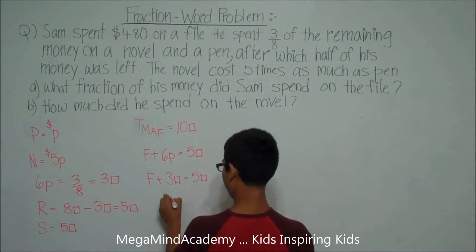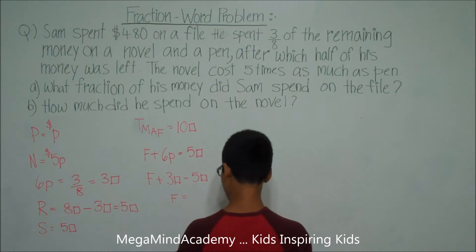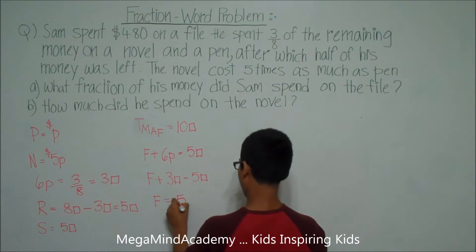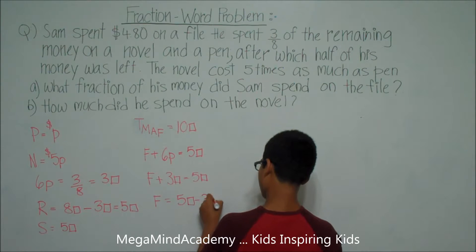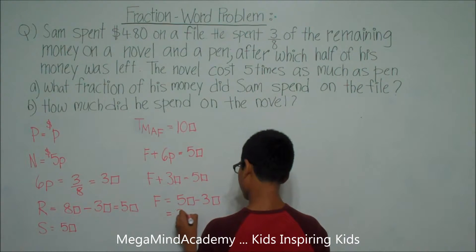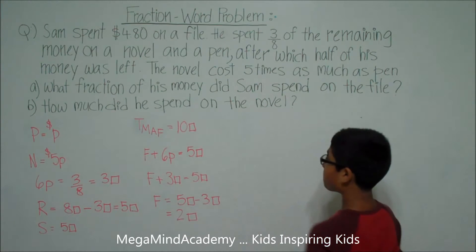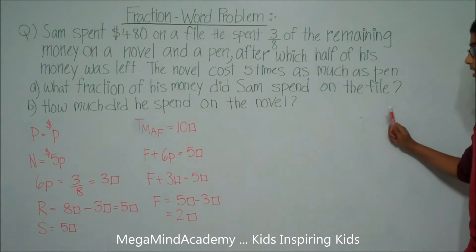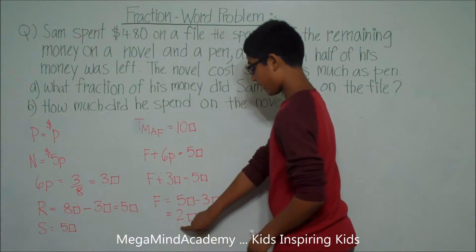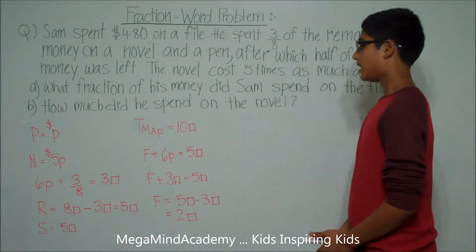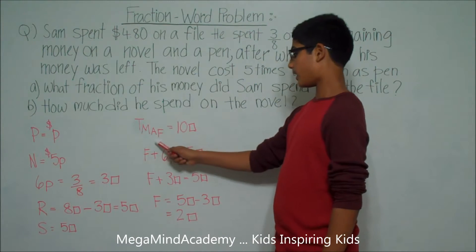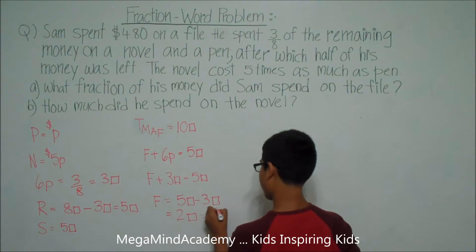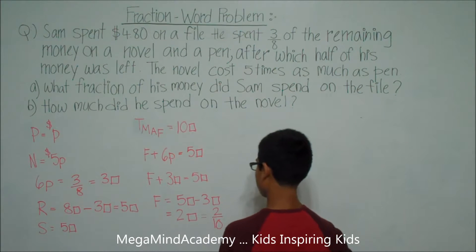So the file F is equal to five units minus three units, which is equal to two units. The problem is asking what fraction of his money did Sam spend on the file. He spent two units of money on the file, and he had ten units of money at first.